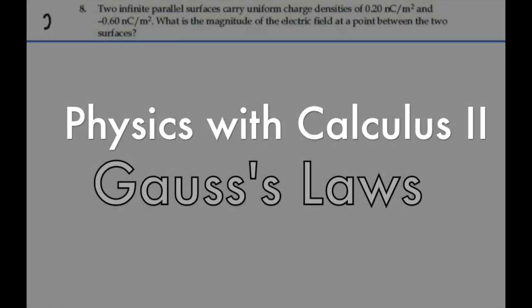Here's problem 24-8. Two infinite parallel surfaces carry uniform charge densities of 0.2 nanocombs per meter squared and negative 0.6 nanocombs per meter squared respectively. What is the magnitude of the electric field at a point between the two surfaces?